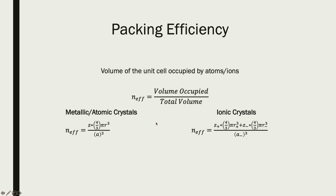For calculating packing efficiency, we take Z (the number of atoms in the unit cell) times (4/3)πr³ (volume of a sphere), divided by a³ (volume of the cube, where a is the edge length). As long as the units for r and a are the same, they cancel out, so packing efficiency is unitless. The result should always be a value between 0 and 1. It doesn't matter what length units you use as long as they're consistent and cancel.